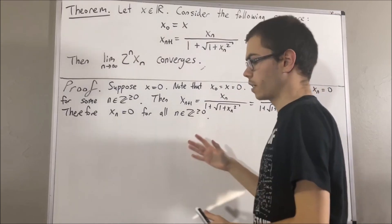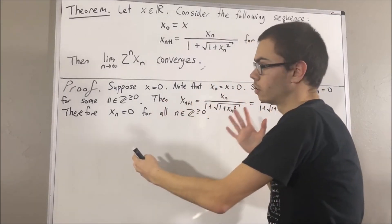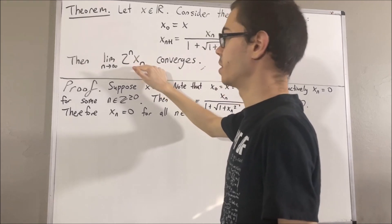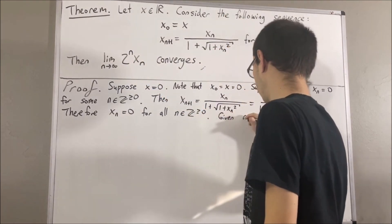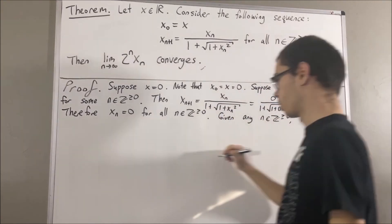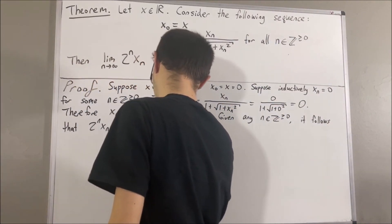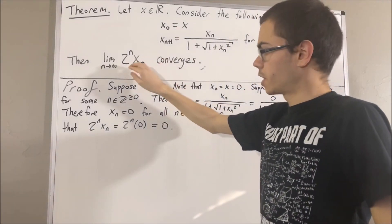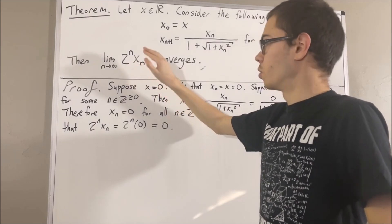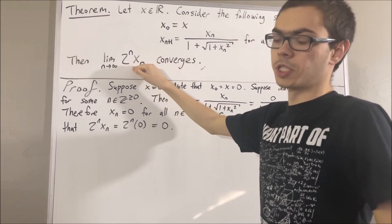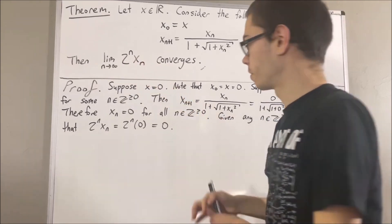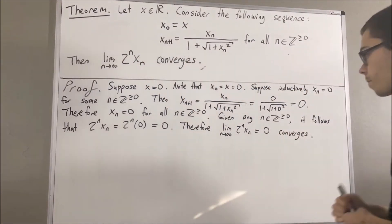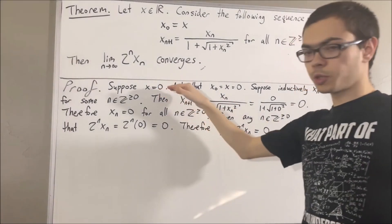From here, it follows that given any n, we have 2 to the n times xn is equal to 2 to the n times 0, which is equal to 0. So all of the terms in this sequence are 0. This is just a constant sequence of 0s, which means the sequence must converge to 0. This completes the case x equals 0.